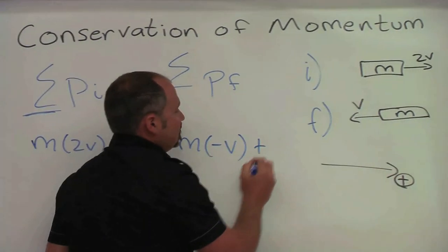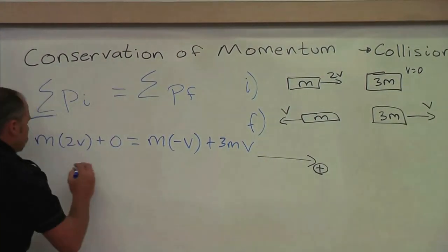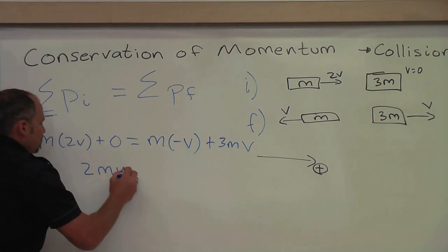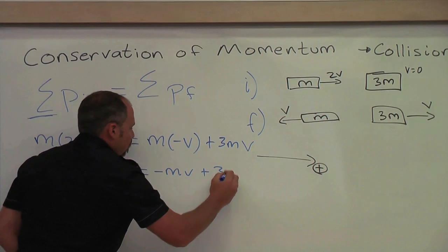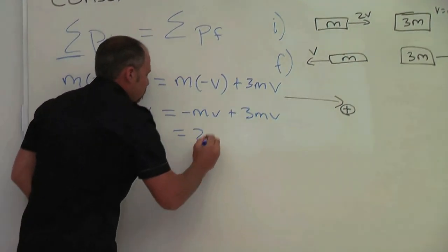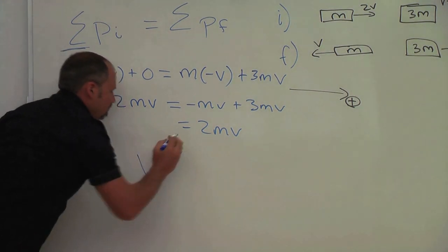And then plus this guy, which is three times the mass times speed V. So here we get a 2MV. And here we get a minus MV plus a 3MV, which is equal to 2MV. Excellent. Momentum is conserved.